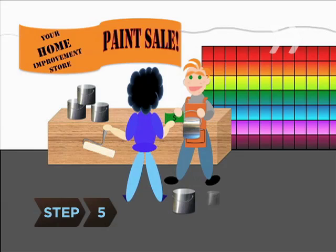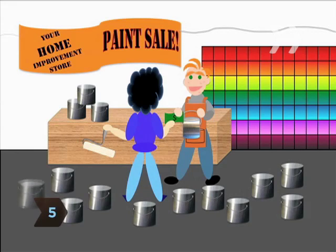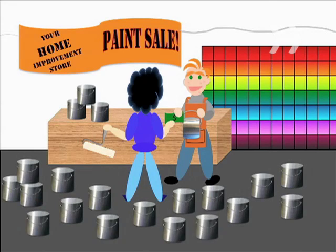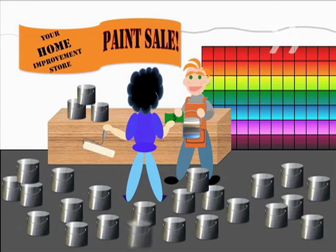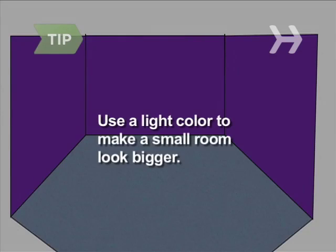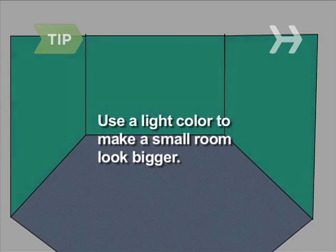Step 5. Choose your paint color. Paint comes in an infinite array of colors and finishes and is available at home improvement stores. Make a small room look bigger by using a light paint color.